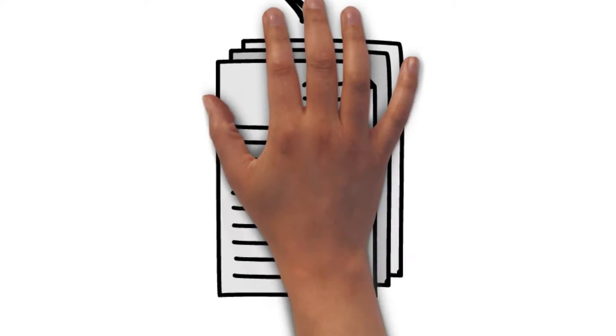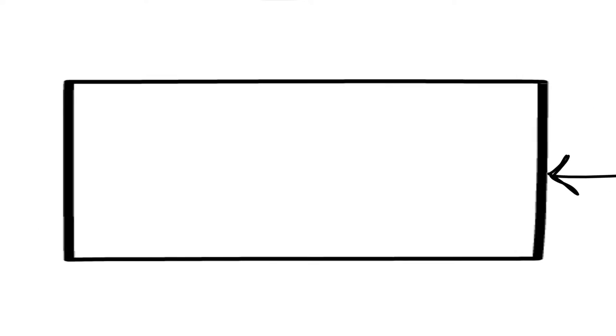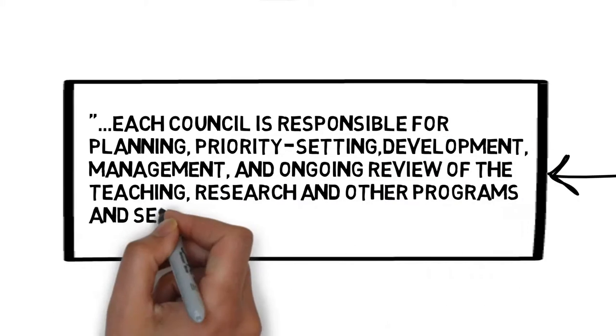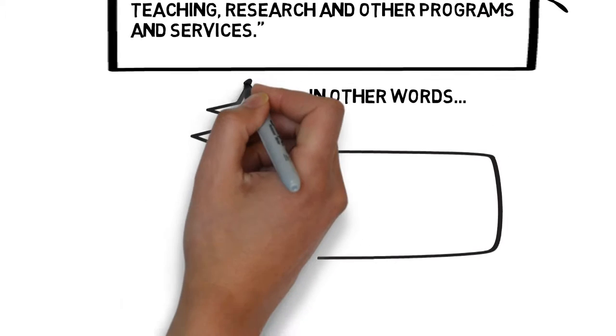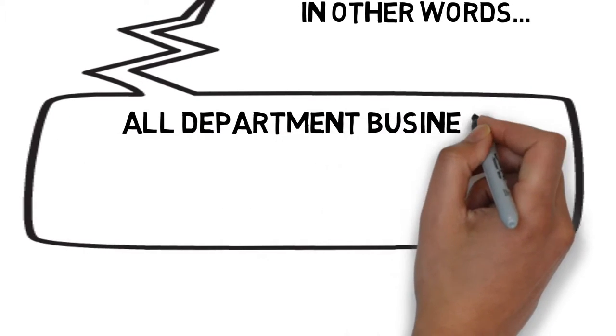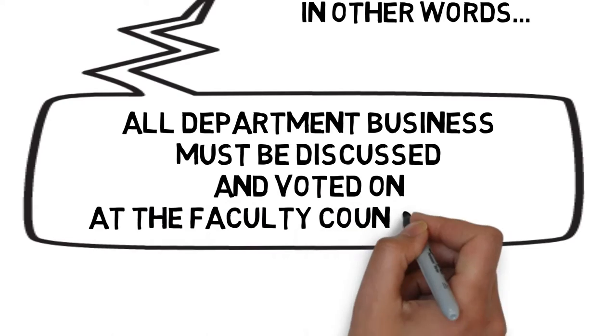According to Appendix B of our Senate bylaws, each council is responsible at the divisional level for planning, priority setting, development, management and ongoing review of teaching, research and other related programs and services of the faculty or school. This means that your faculty council makes the rules for the government, direction and management of your faculty or school and its affairs.